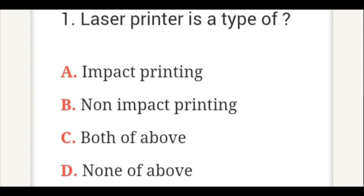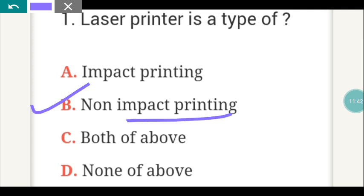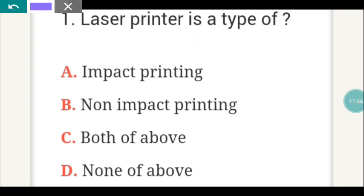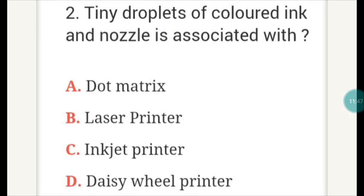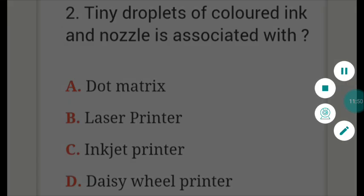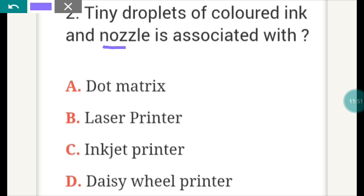Laser printer is a type of what? The answer is B — Non-impact printing. Tiny droplets of colored ink and nozzles are associated with which printer? The answer is C — Inkjet printer.